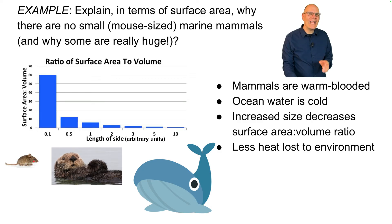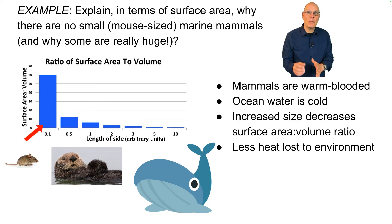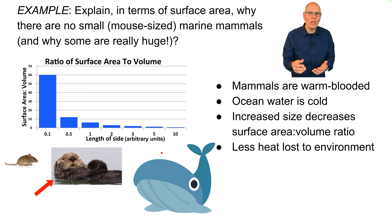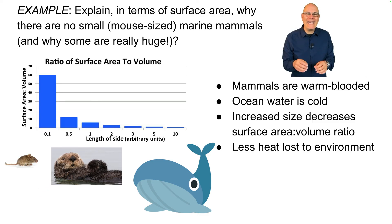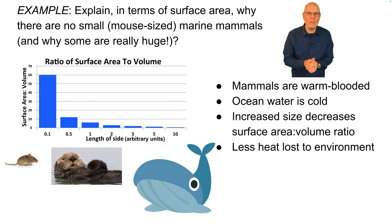Think about a mouse — it's small, it has a lot of surface area relative to its volume. It would be over here on the graph. It couldn't survive because it would experience so much heat stress in the water. The smallest marine mammals are the otters, and they have a thick coat of fur that helps them maintain their body temperature. Whales have evolved to be larger and larger for a variety of reasons, but one of which is that by being big, they lose relatively less heat to the environment than a smaller animal would. It's all about the surface area to volume ratio.